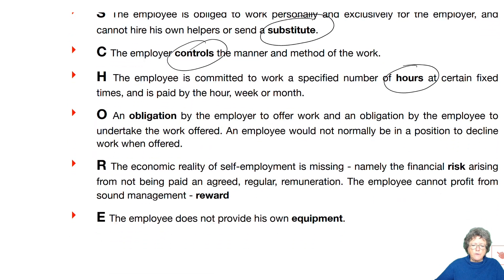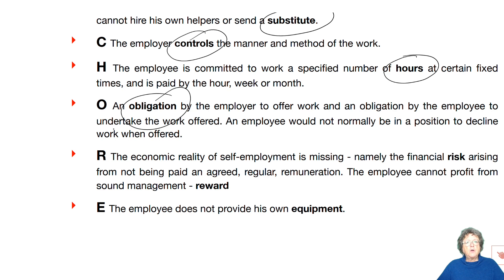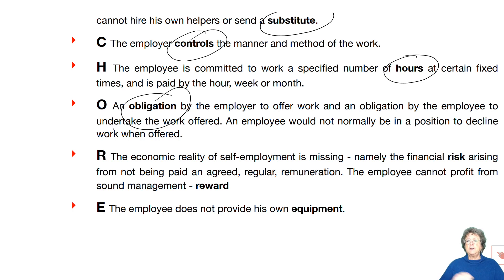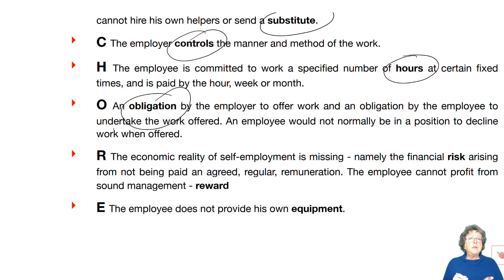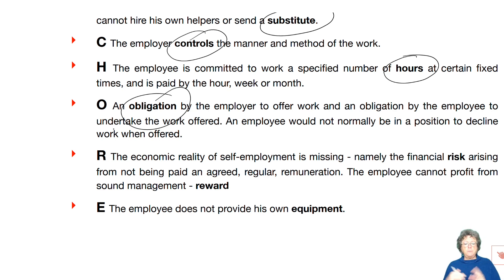Obligation is one of the main factors. As an employee you are obliged to go to work every day and are not in a position to decline work. If you are self-employed, you can decline. For example, if somebody offers me a teaching assignment, I can look at it and say yes or no — I can decline it. Obviously if you continually decline work you're not technically self-employed, but you get the picture.